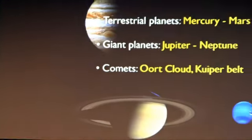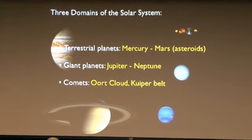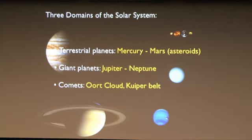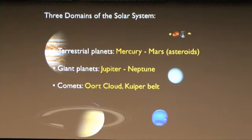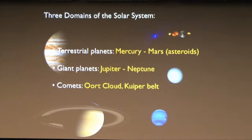I'll begin by talking briefly about the solar system. This talk was much too long when I practiced, so I cut out significant parts, including most of the solar system discussion. It makes sense to consider the solar system divided into three domains — three regions where properties of the objects have something in common. First, there's the domain of the terrestrial planets: Mercury, Venus, Earth, and Mars. The asteroids should probably be included too.